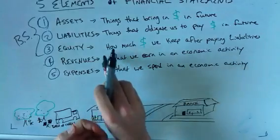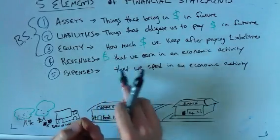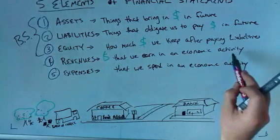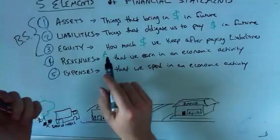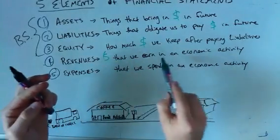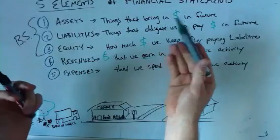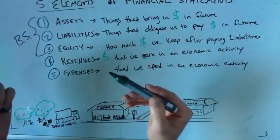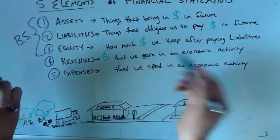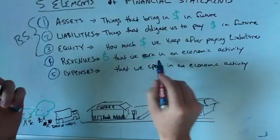And then you have your revenues and expenses. So revenues are, this is the money that we earn in an economic activity. So this is going to be a critical point. It's something that we earn in an economic activity. So I sell you something, you give me some money for that sale, then I've made some money. I've earned that money.